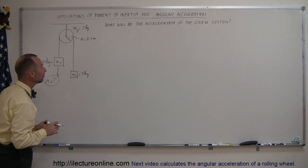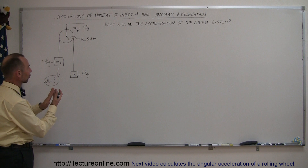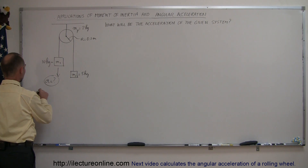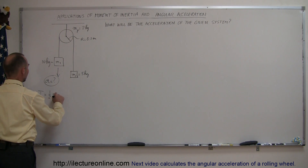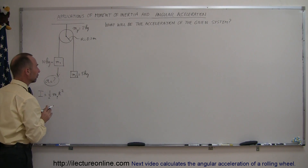Assume that the pulley is like a solid disk, so we know that the moment of inertia of the pulley, I, is equal to one-half times the mass of the pulley times the radius squared. So it has a moment of inertia.